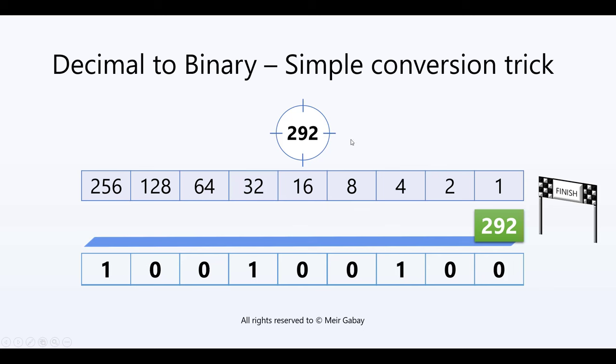292 in binary is 100100100. This is how you write the number in binary.